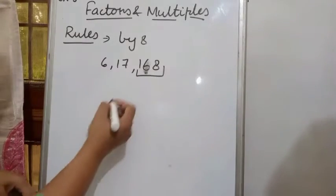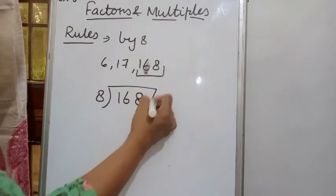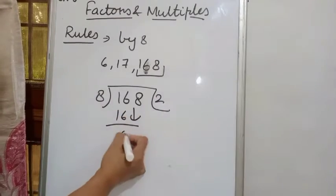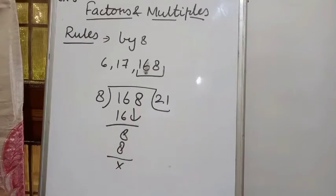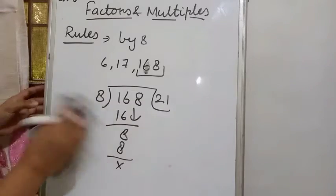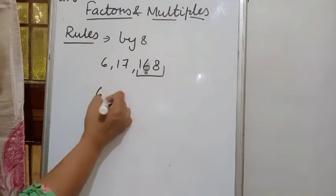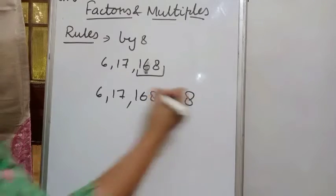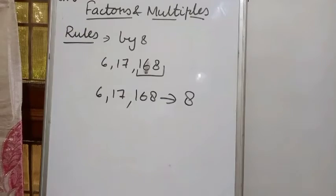Let's check whether 168 is divisible by 8 or not. 8 ones are 8, 8 twos are 16 — bringing down the digit, 168 is completely divisible by 8, giving 21. So the whole number 617168 is also divisible by 8.